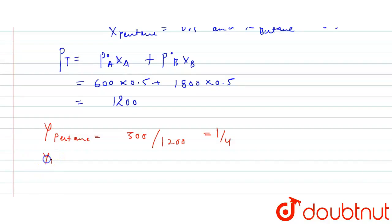And Y butane equals 900 divided by 1200, which equals 3 by 4.